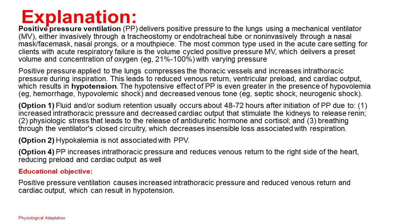Correct answer: 3. Positive pressure ventilation (PPV) delivers positive pressure to the lungs using a mechanical ventilator — either invasively through a tracheostomy or endotracheal tube, or non-invasively through a nasal mask, face mask, nasal prongs, or mouthpiece. The most common type used in acute care is volume-cycled positive pressure MV, which delivers a preset volume and concentration of oxygen (21% to 100%) with varying pressure. Positive pressure applied to the lungs compresses the thoracic vessels and increases intrathoracic pressure during inspiration, leading to reduced venous return, ventricular preload, and cardiac output — which results in hypotension. This hypotensive effect is even greater in the presence of hypovolemia or decreased venous tone, e.g., septic shock or neurogenic shock.